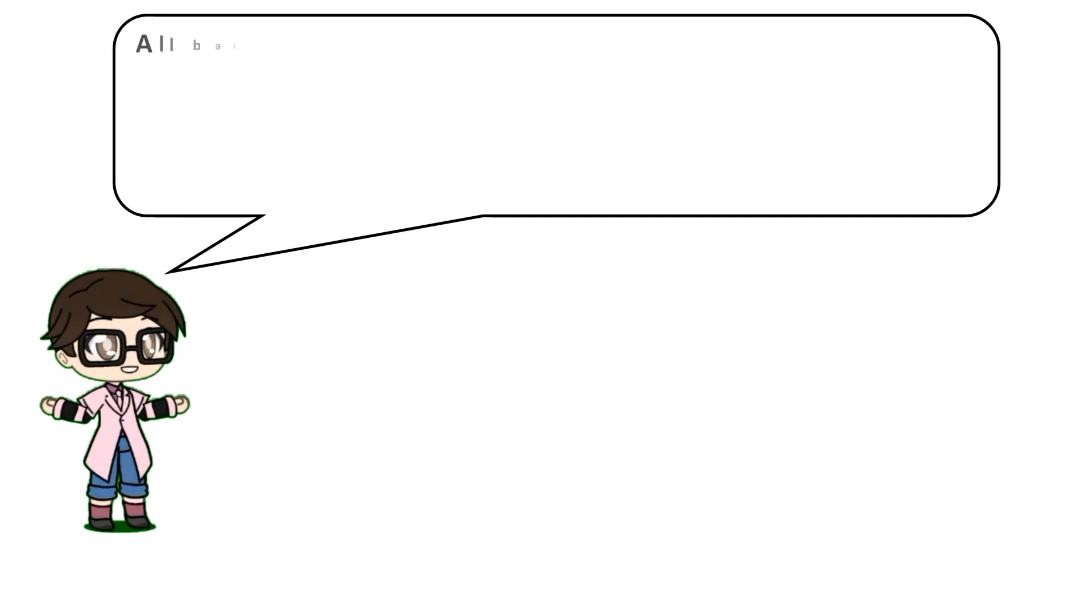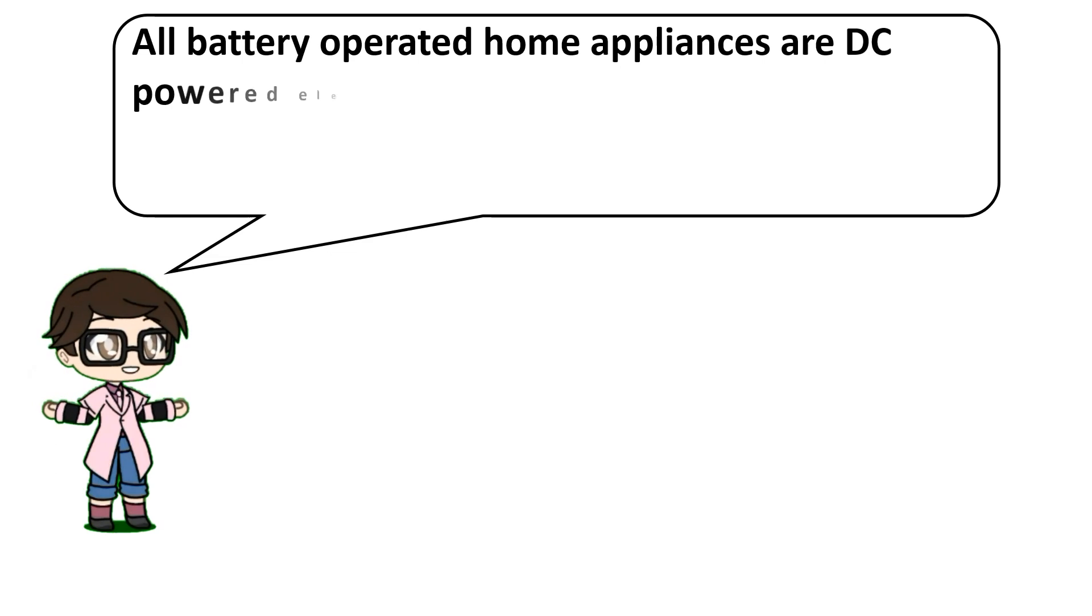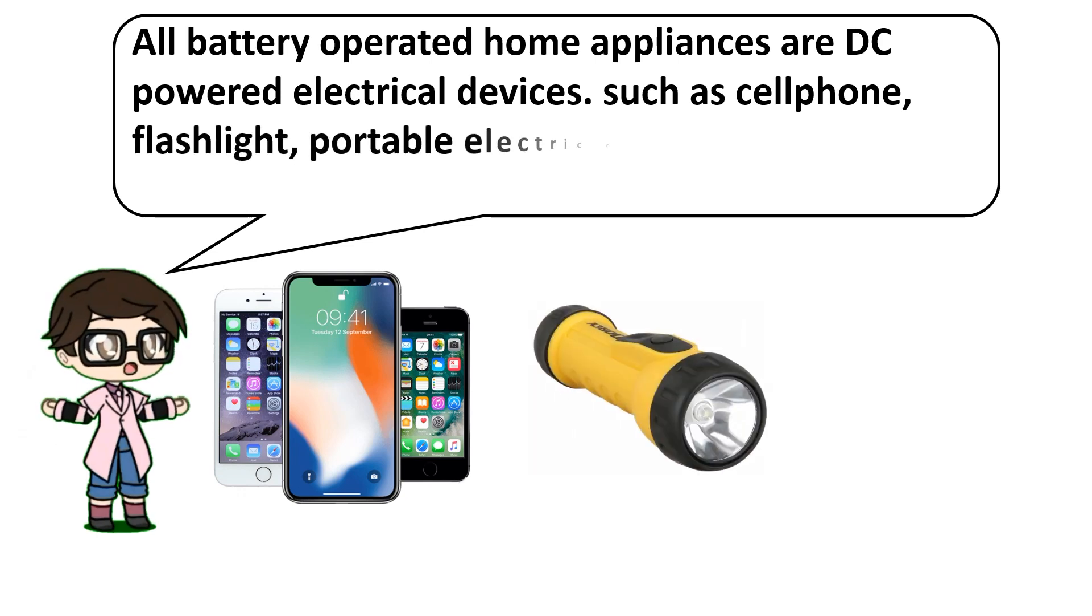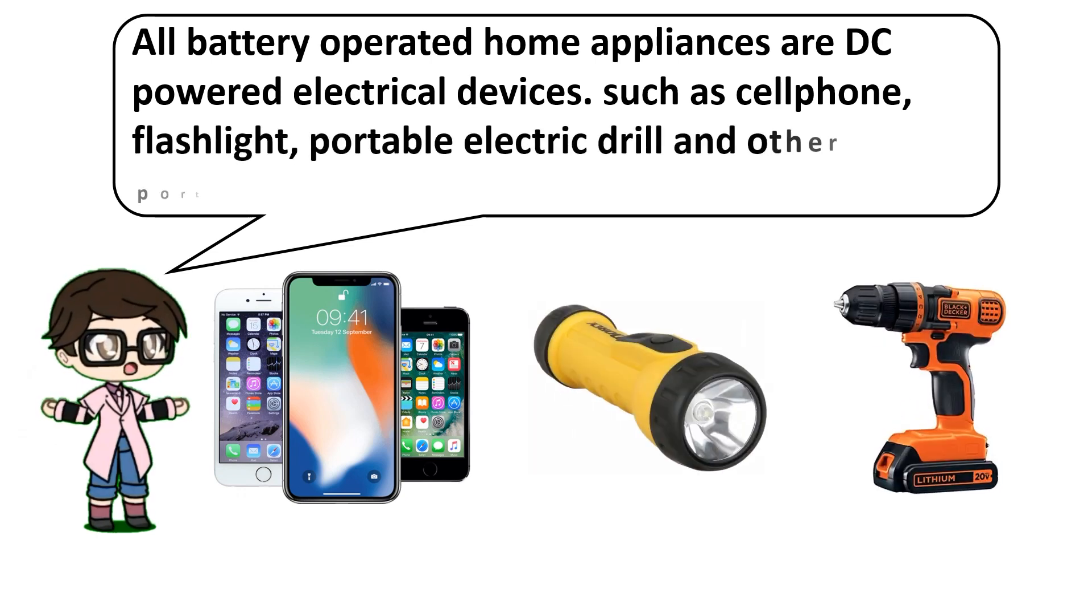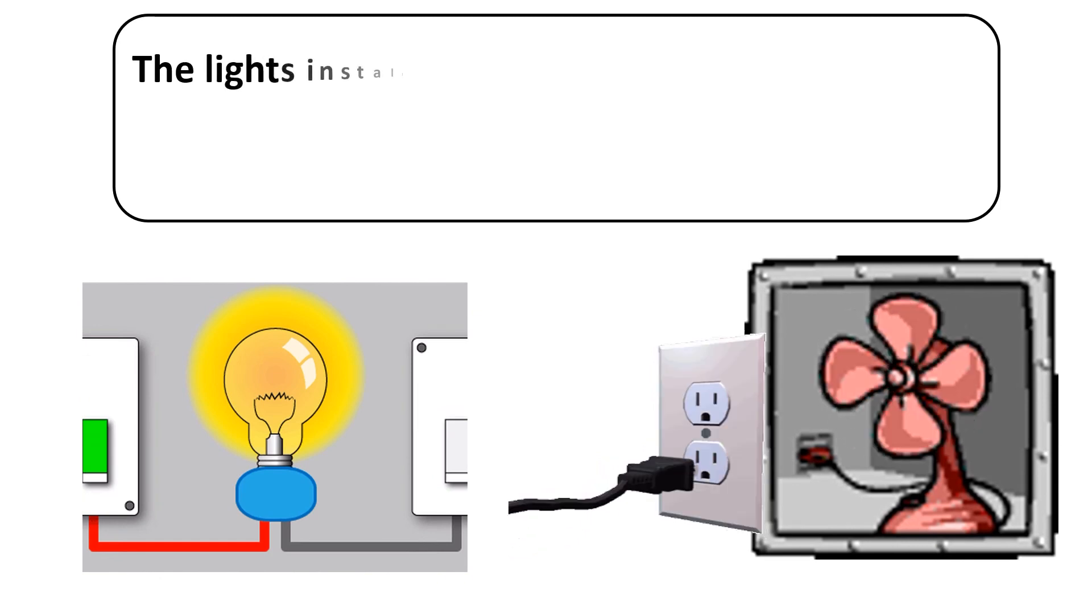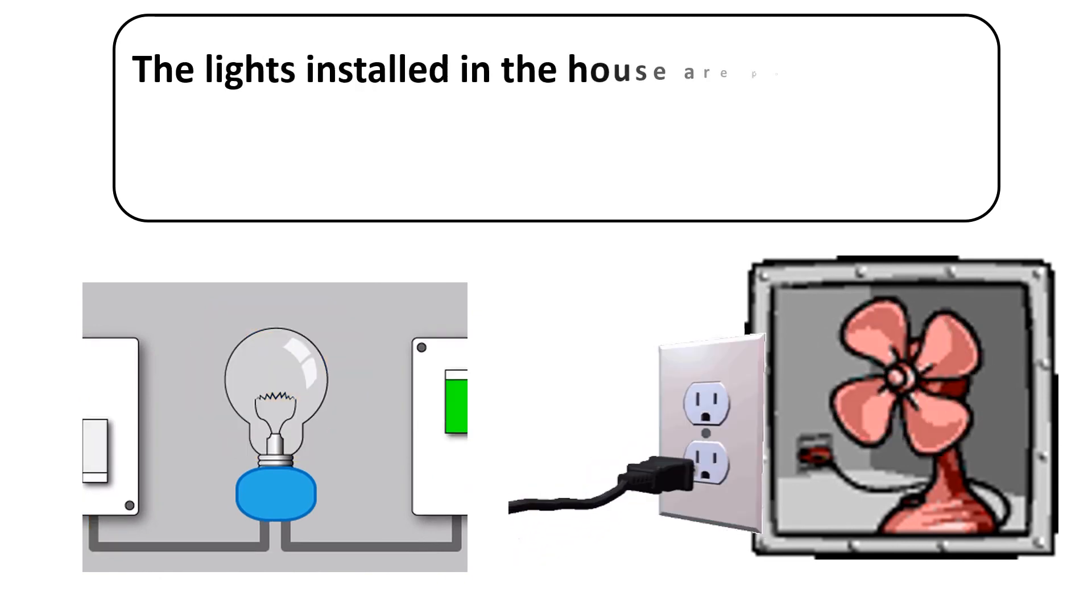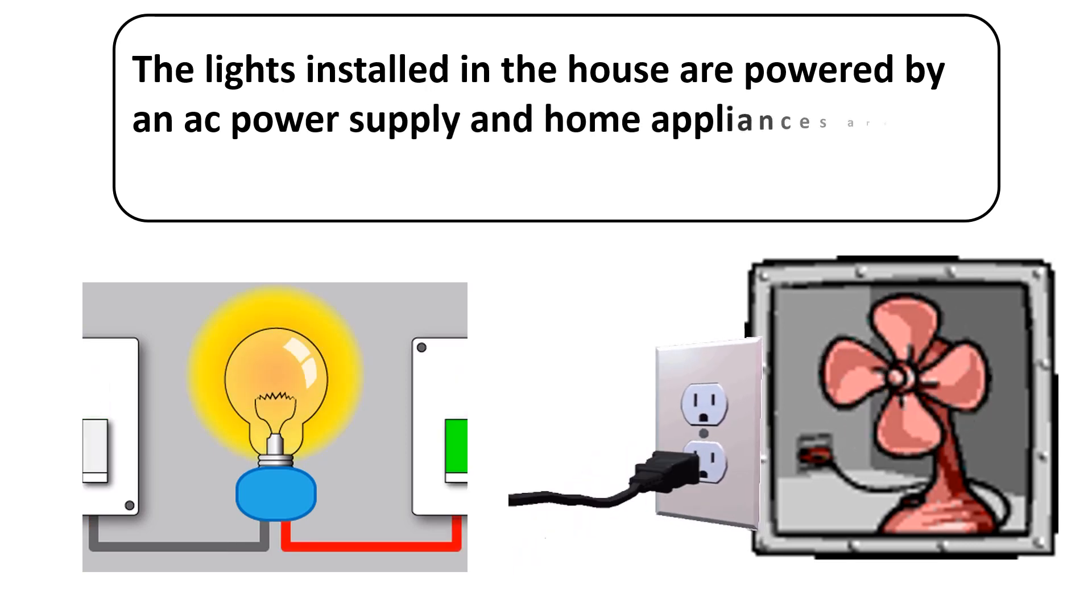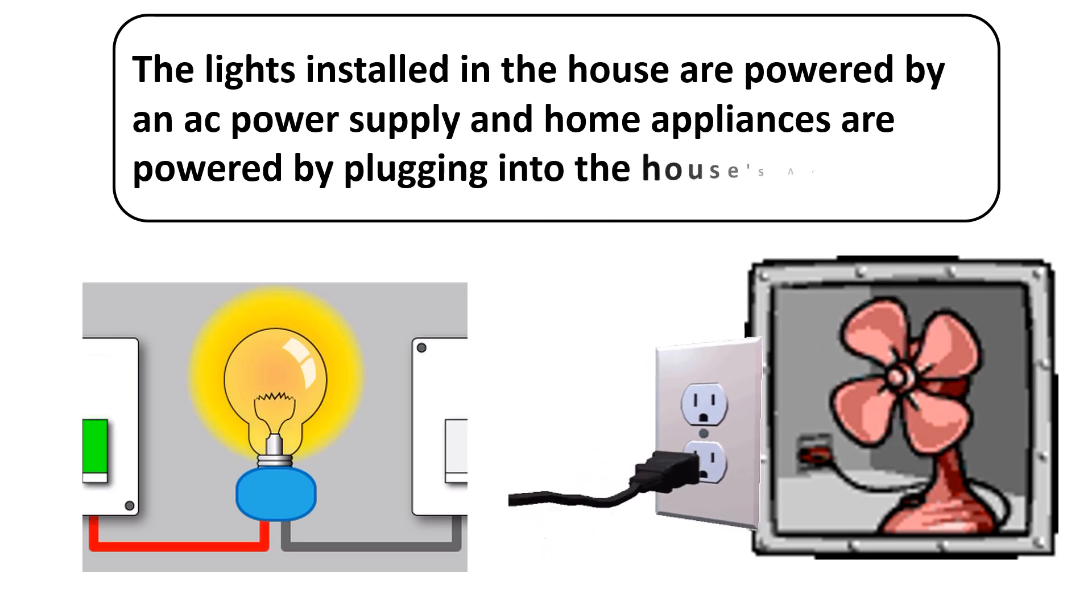All battery-operated home appliances are DC powered electrical devices, such as cell phone, flashlight, portable electric drill, and other portable appliances. The lights installed in house are powered by an AC supply, and home appliances are powered by plugging into the house AC outlet.